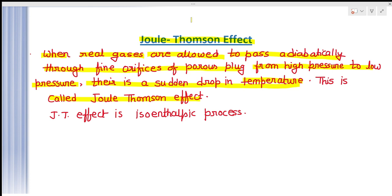This is seen in all cases, but sometimes in hydrogen or helium there is a rise in temperature. So these are two exceptions where we see a rise in temperature, but in all other cases of real gases we see a sudden drop in temperature whenever the real gas is passed through the porous plug from a region of high pressure to a region of low pressure in adiabatic conditions. Another important thing is that the Joule-Thompson effect is an iso-enthalpic process, meaning the enthalpy will remain the same throughout.